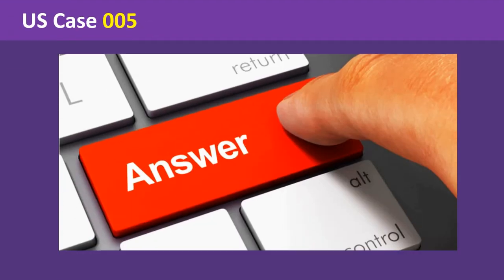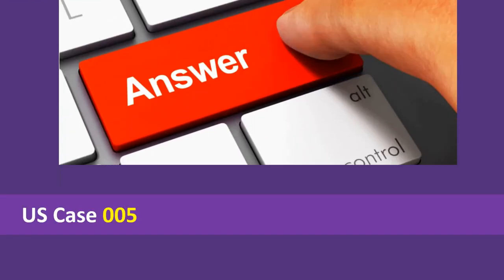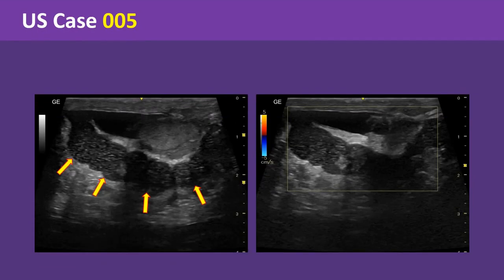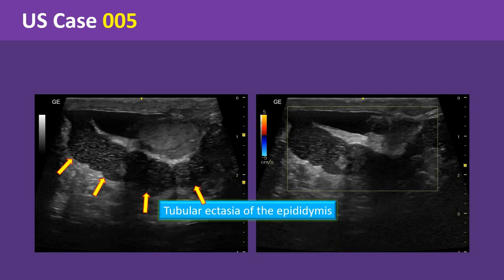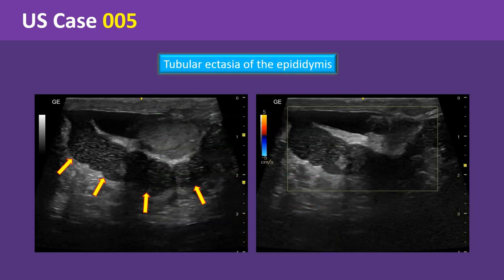Okay, let's see the answer. As you can see in these two images, the epididymis is diffusely enlarged. It reflects a hypoechoic echo pattern with speckled appearance. On color Doppler examination, there is no increased vascularity. These ultrasound features are highly suggestive of tubular ectasia of the epididymis.